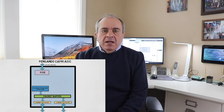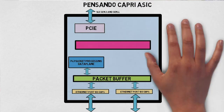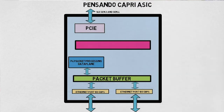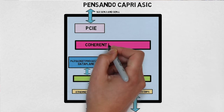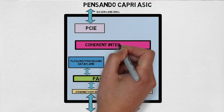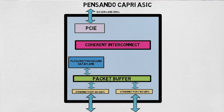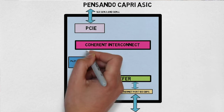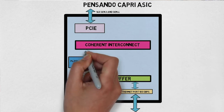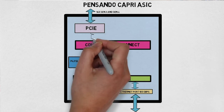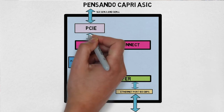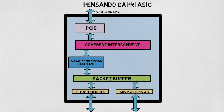The P4 packet processor is connected to a coherent interconnect. This interconnect is a sort of on-chip crossbar that connects all the different ASIC components. It is a coherent memory interface that dramatically simplifies the software architecture, while at the same time providing very high throughput.